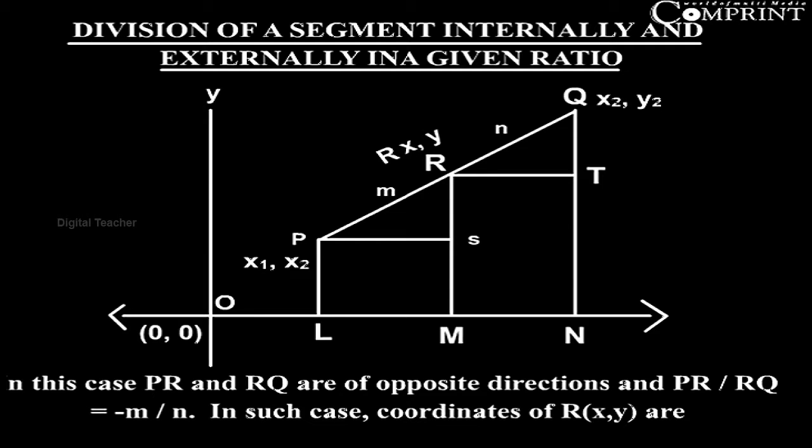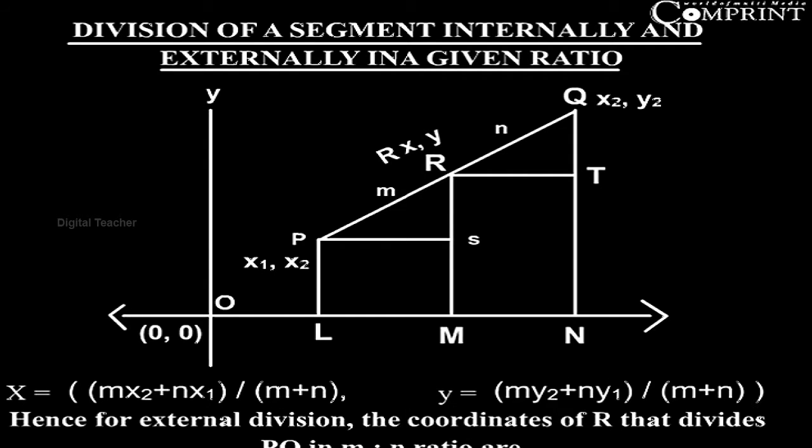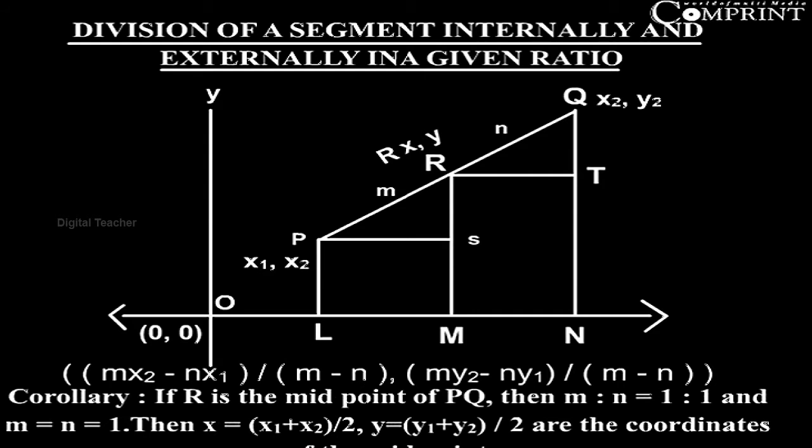In such case, coordinates of R(x, y) are x = (mx₂ - nx₁)/(m - n), y = (my₂ - ny₁)/(m - n).